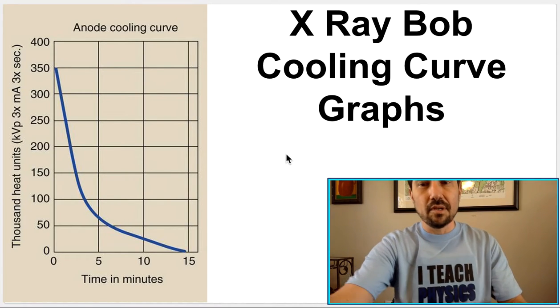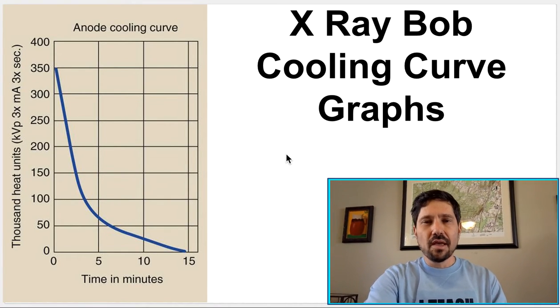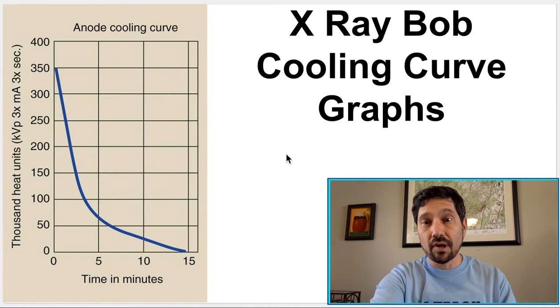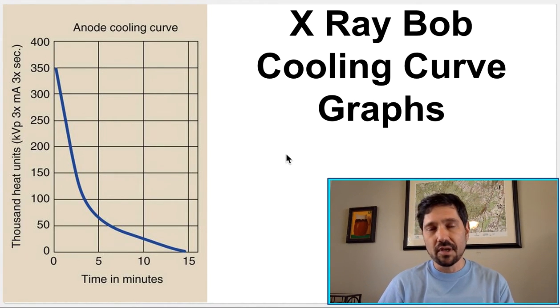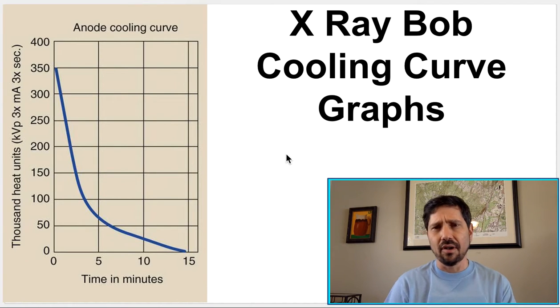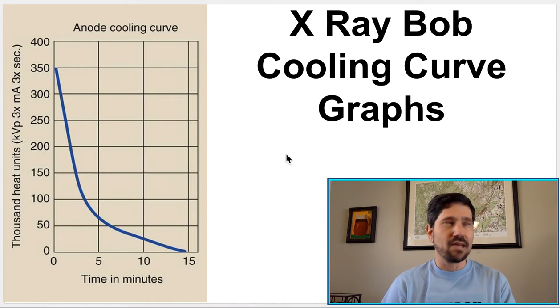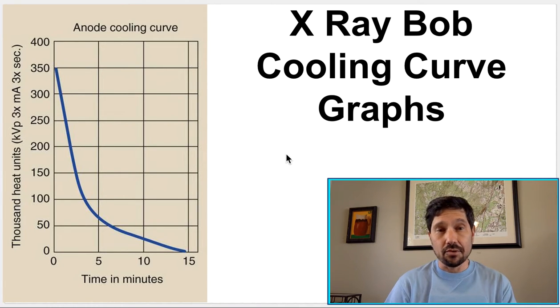You'll have two types of cooling curve problems. One are anode cooling curves, the other are housing cooling curves. The plots will look identical. They'll often come at you in pairs, and they want to make sure you can identify which graph to use.